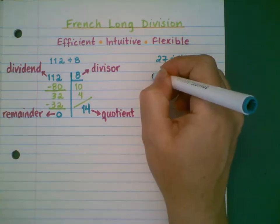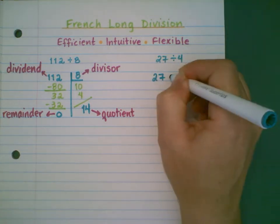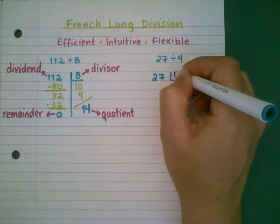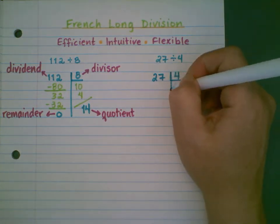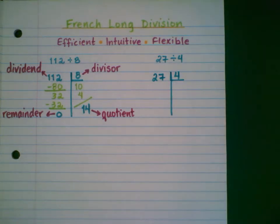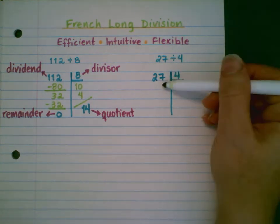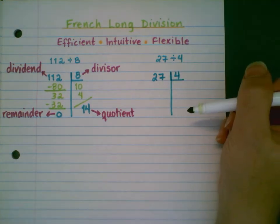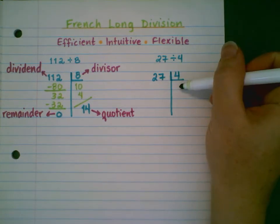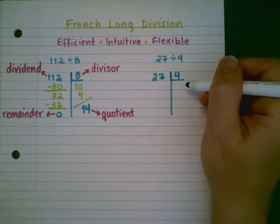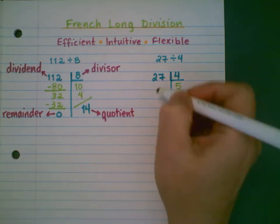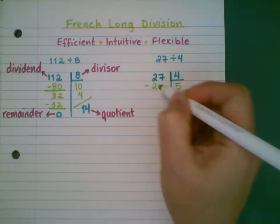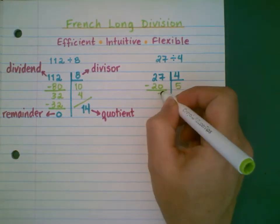Let's do another one: 27 divided into groups of 4. I extend that center line down. I'm thinking of multiples of 4 that are less than 27. If I did times 10 again, that would be too high — that would be 40. So I'm going to go for times 5. 4 times 5 is 20. Subtract — that's 7.